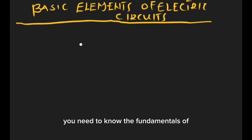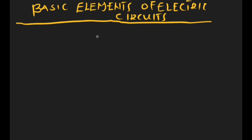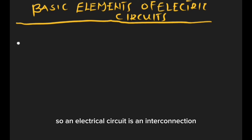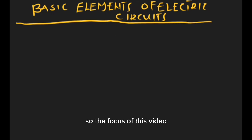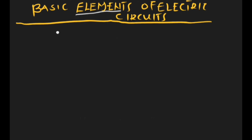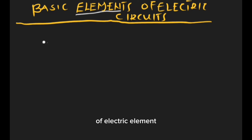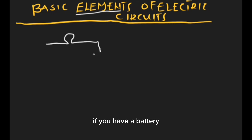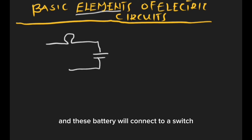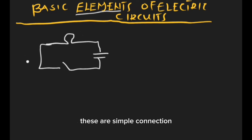So, to start your course in applied electricity you need to know the fundamentals of an electric circuit. First of all, what is an electric circuit? An electric circuit is the interconnection of electrical elements. For example, if you have a bulb, a battery, and a switch all connected together, that is a simple basic electrical circuit.